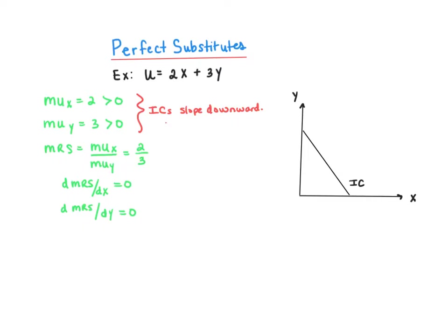That's because as the consumer consumes more of one good, he has to give up some of the other in order to remain as well off. The MRS in this example is 2/3. Taking the partial derivative of the MRS with respect to each good gives me a partial derivative of 0. That means that as good x gets bigger, the slope doesn't change, and as good y gets smaller, the slope also doesn't change. This tells us that the indifference curve is linear because as x gets bigger and y gets smaller from left to right, the MRS is constant.